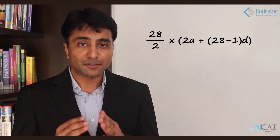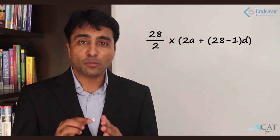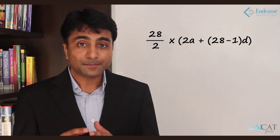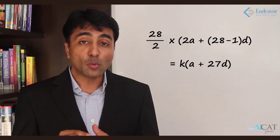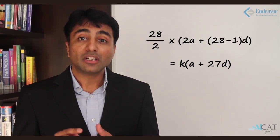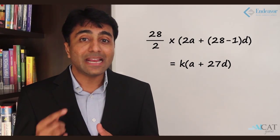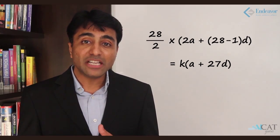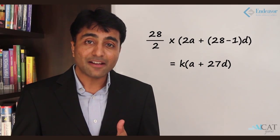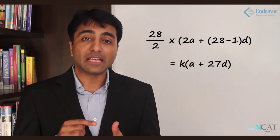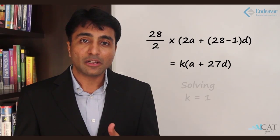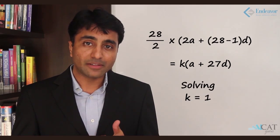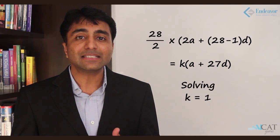The sum up to 28 terms is (28/2) = 14 times (2a plus 27d), and this equals k times the 28th term, where the 28th term is a plus 27d. We know a equals 13 and d equals minus 1. Replacing these values and solving the entire equation gives k equals 1.